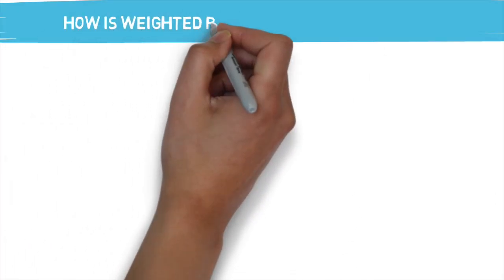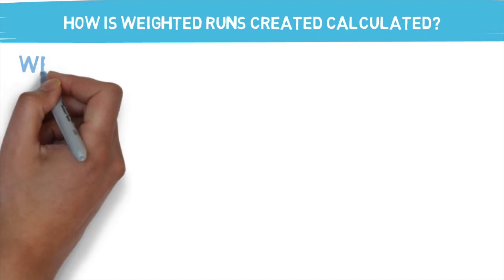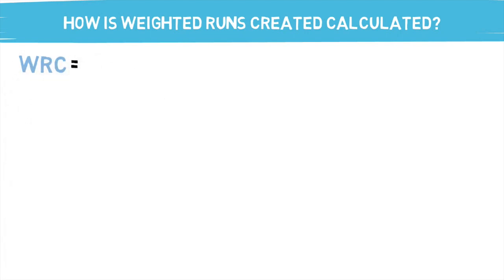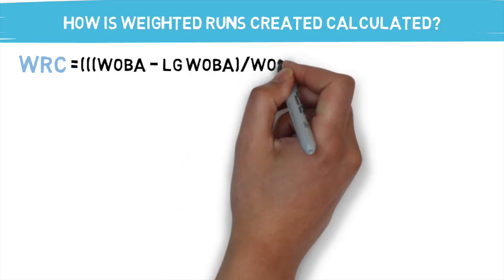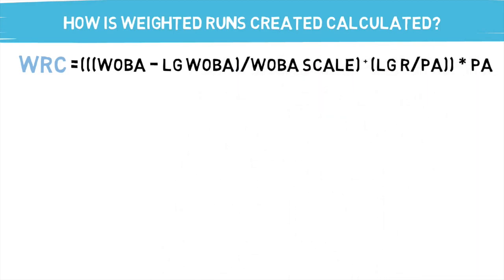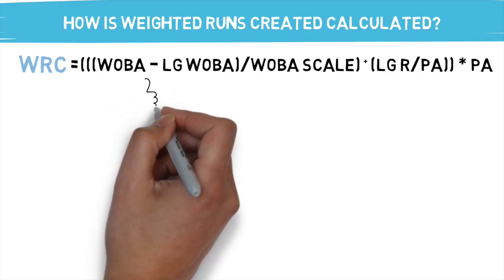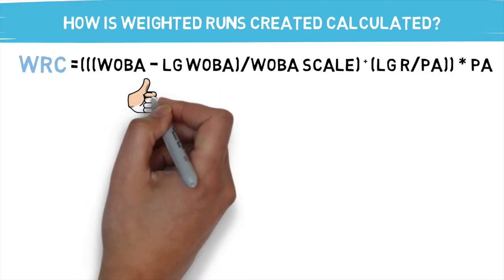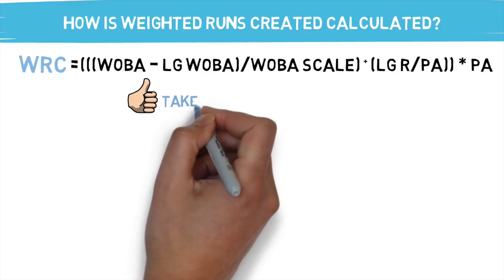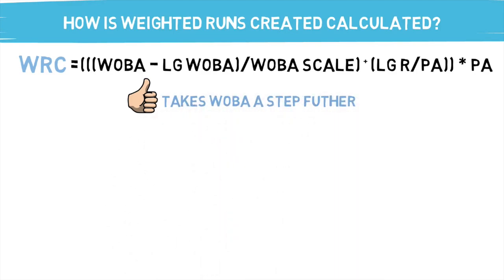The goal of the plus is to eliminate park and league advantages. Now let's get back into runs created. So how are these stats calculated? Starting with weighted runs created: it takes a player's wOBA, less the league average wOBA, divided by your wOBA scale — a provided constant — and then you add the league average runs per plate appearance, multiplied by the player's plate appearances. This statistic isn't that intimidating. It does a phenomenal job taking your wOBA stat a step further. A higher weighted runs created number means that the player is producing well. However, that's where weighted runs created plus comes in to steal the show.